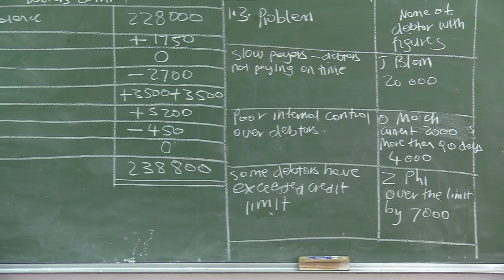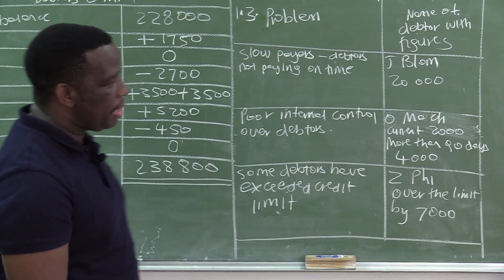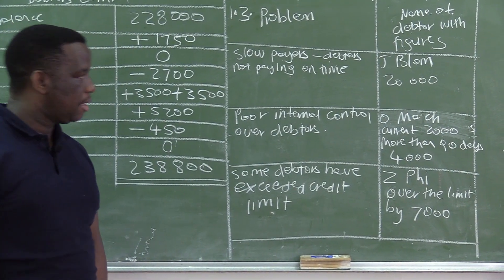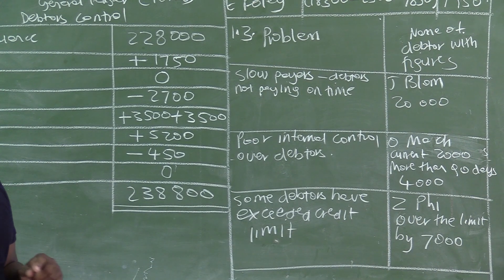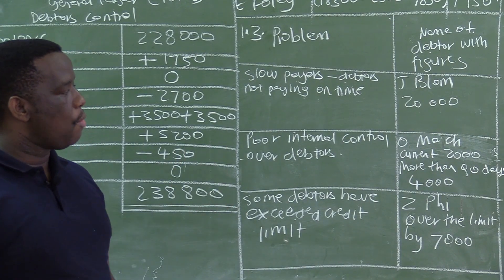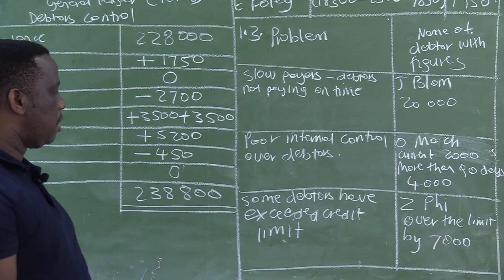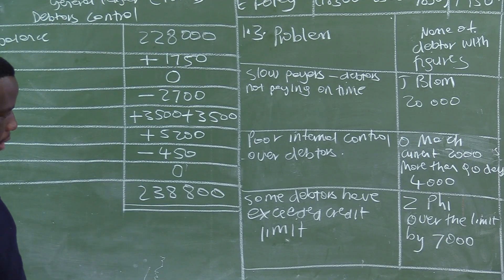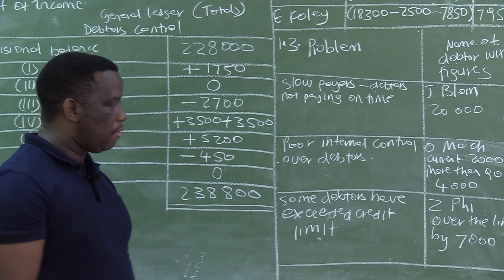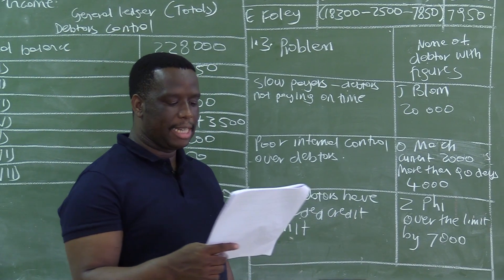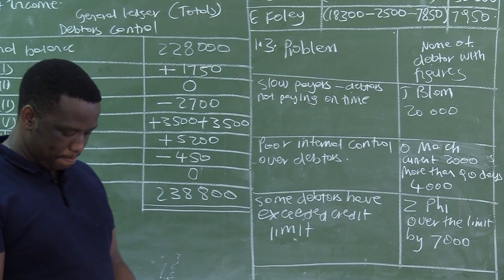To summarize: debtors are not paying on time — we give them 30 days but some come back after 60 or even 90 days. There is also poor internal control; we continue selling to Omak whose account is more than 90 days overdue, with R2,000 in current sales. Finally, some debtors have exceeded their credit limit — ZPhi was given R22,000 as a credit limit but the balance owing is R29,000, making them R7,000 over the limit.